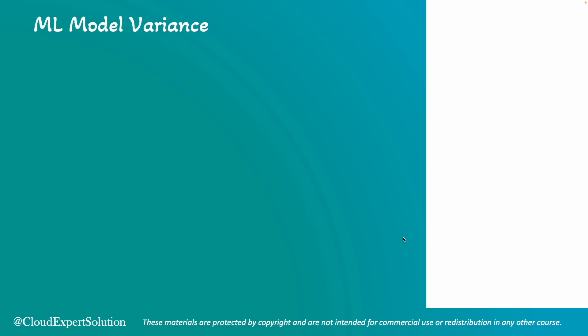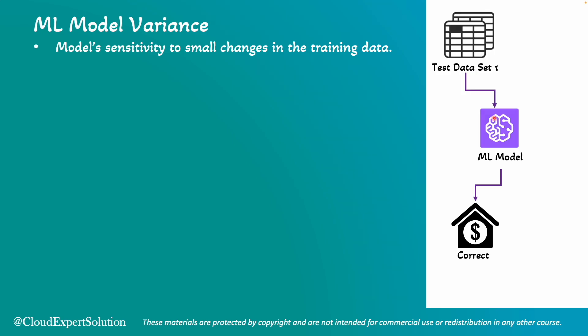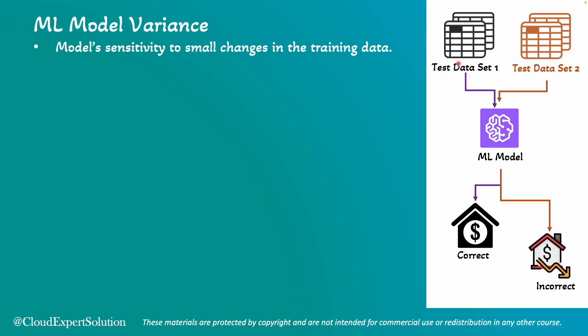Next, we'll review model variance. Variance is a model's sensitivity to small changes in the training data. For example, consider a machine learning model used for predicting house prices. The model performs well with the initial test dataset, producing accurate predictions. However, when a new test dataset is introduced, the model's performance declines, showing drops. This indicates the model's predictions were too closely tied to the original dataset, making it sensitive to new or unfamiliar data.